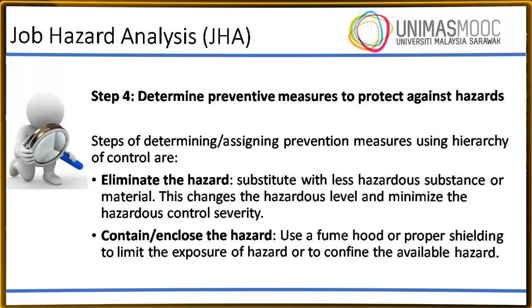The steps of determining and assigning preventive measures using the hierarchy of control are: eliminate the hazard; substitute with a less hazardous substance or material, which changes the hazardous level and minimizes the hazard control severity.